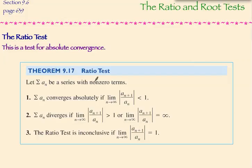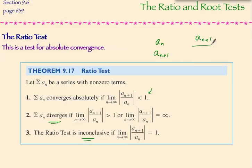A series with non-zero terms converges absolutely if you take a limit as n approaches infinity of the a sub n plus 1 term over the a sub n term and find that that limit is less than 1. It diverges if that same limit is greater than 1 or infinity, and the ratio test is inconclusive if this limit equals 1. We will identify the a sub n term, identify the a sub n plus 1 term, make a ratio a sub n plus 1 over a sub n, take the limit as n approaches infinity — including the absolute value — and based on what it is, we'll determine if it converges absolutely, diverges, or if the test is inconclusive.